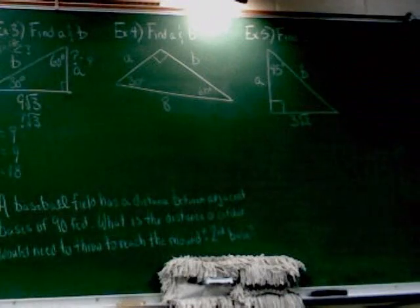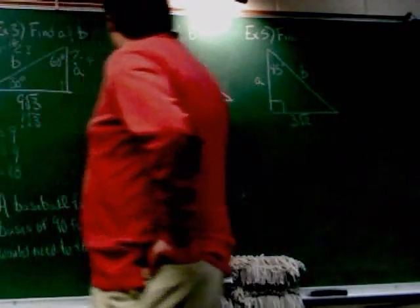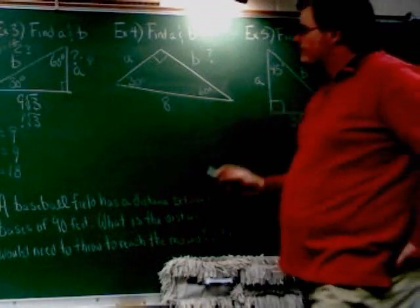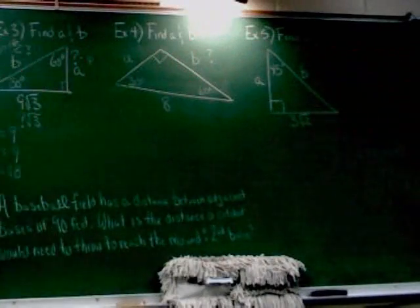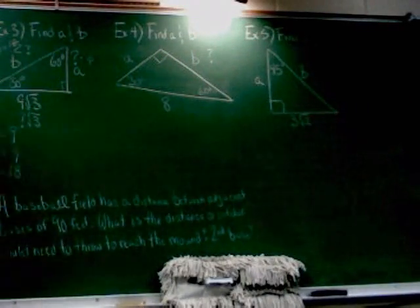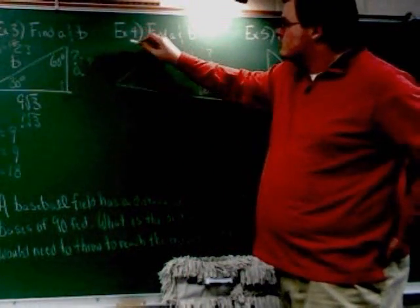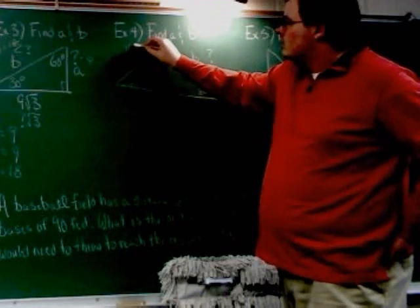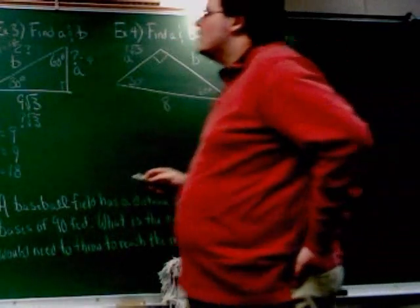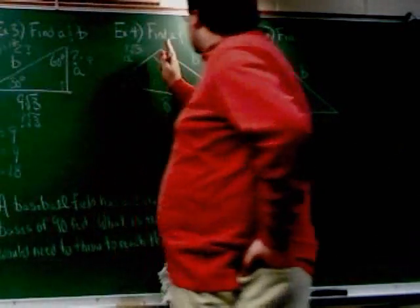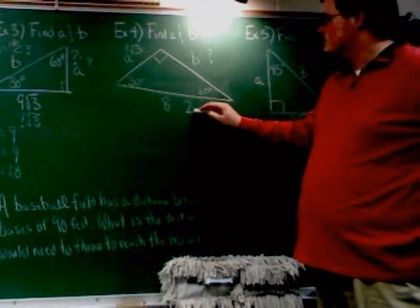All right, so across from 30 is question mark. So my 30 go across. This side here, where B is, is question mark. Across from 60, question mark root 3. So across from 60, question mark root 3. And across from the 90, 2 times question mark. Across from 90, 2 times question mark.